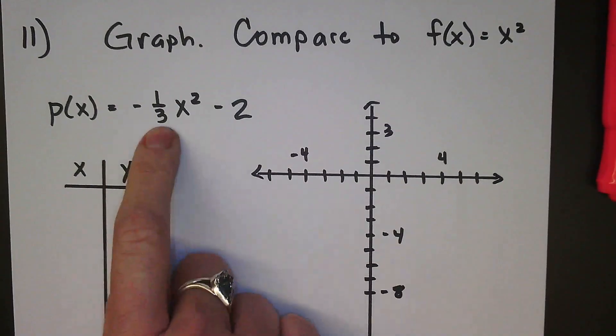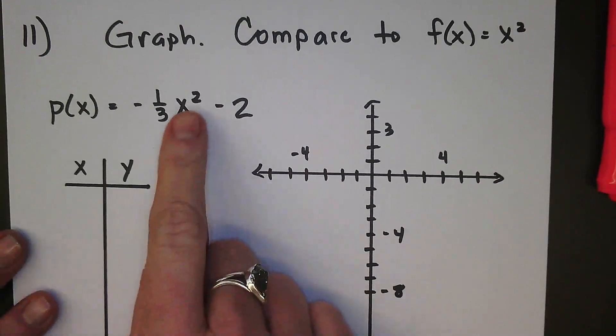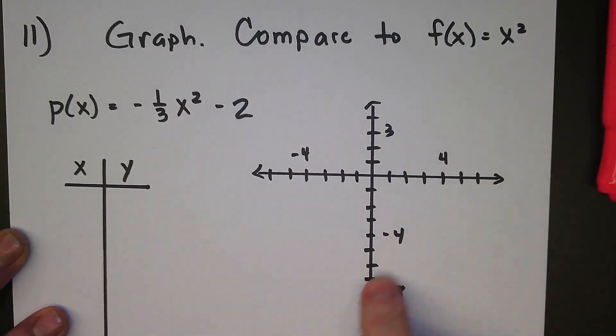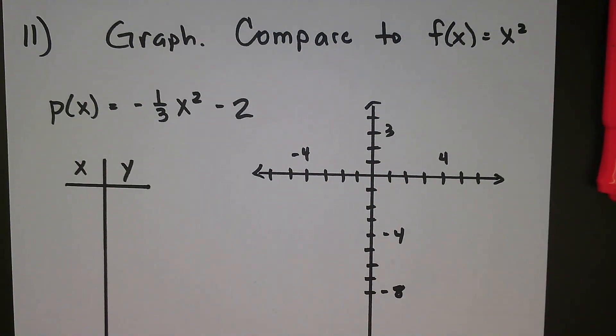So this is going to have a little bit of a different shape to it. Right now we only have an x squared term, which means our parabola is going to be centered around the y-axis. We're going to have an axis of symmetry at x equals zero, the y-axis.